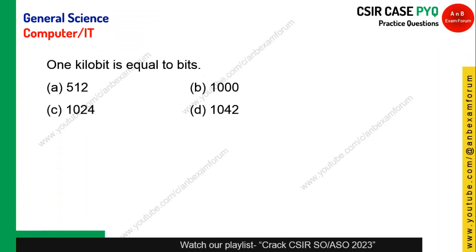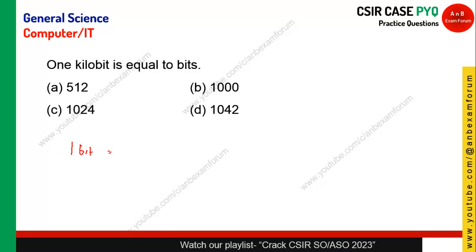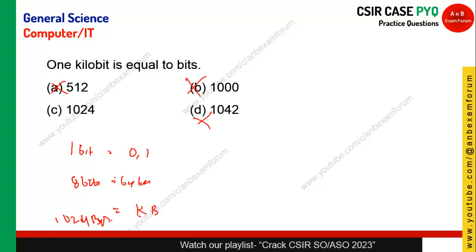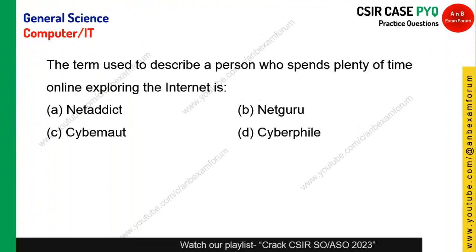1 KB is equal to how many bits? One bit is 0 or 1; eight bits make one byte. After byte we have kilobyte — kilo is not 1000 in computing. It is not option B, not option D (512). It is 1024 bytes per kilobyte. But the question asks for kilobit, so 1 KB = 1024 bits. Option C is the right answer.